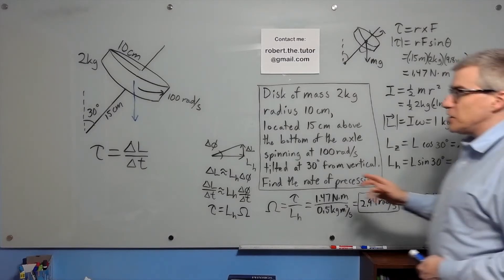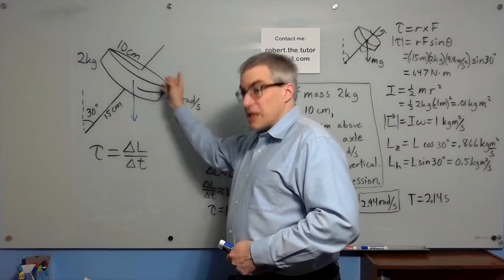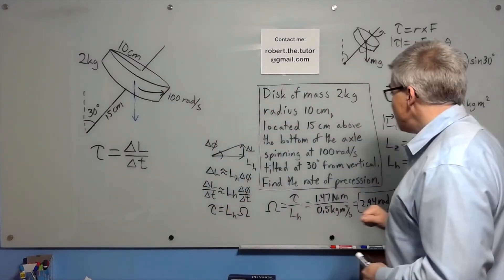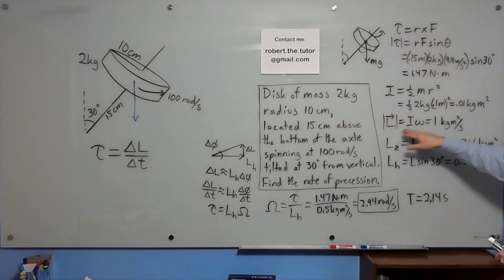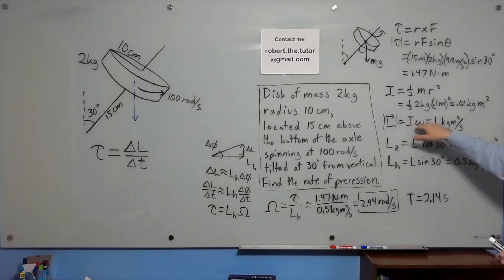Next, we need to know, based on how fast it's spinning, how much angular momentum has it got? Well, the magnitude of it is going to be I times omega. And since omega is 100 radians per second, and this is 0.01, we end up with 1 kilogram meter squared per second. Here's where it gets a little tricky.